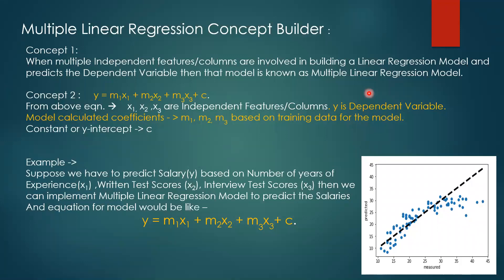This is about the concept building part — what is actually a multiple linear regression algorithm. The first thing is how it is different from simple linear regression. The main focus is that the independent features are multiple. As the name suggests, there are multiple independent columns or features involved. Based on multiple independent features and columns, we predict the output of a dependent variable. That is the base of the multiple linear regression model.